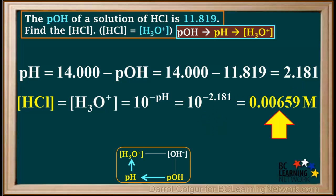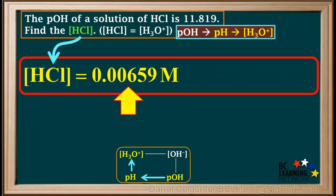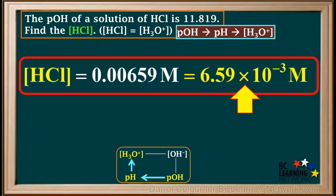This equals 0.00659 molar. This has three significant figures because the given pOH was expressed to three decimal places. So the final answer is [HCl] = 0.00659 M, or in scientific notation, 6.59 × 10^(-3) M.